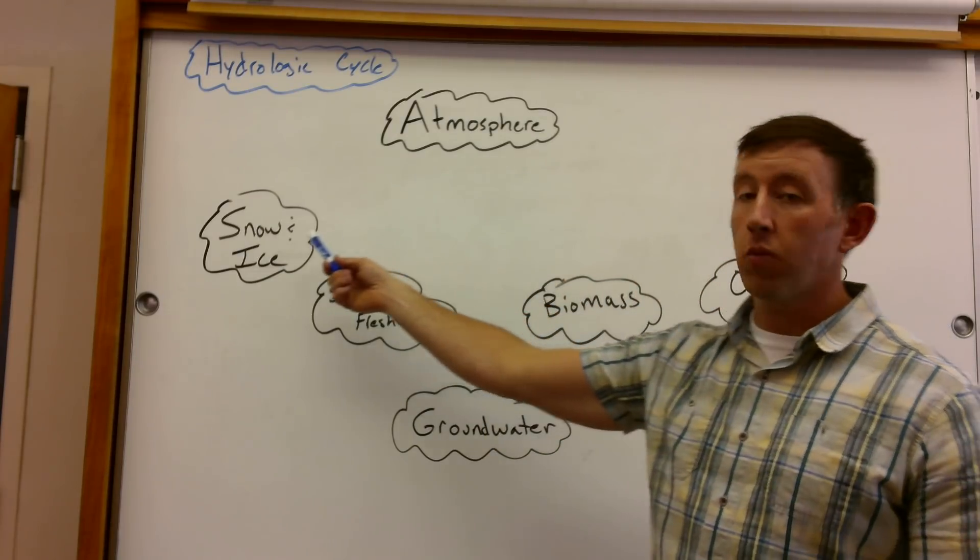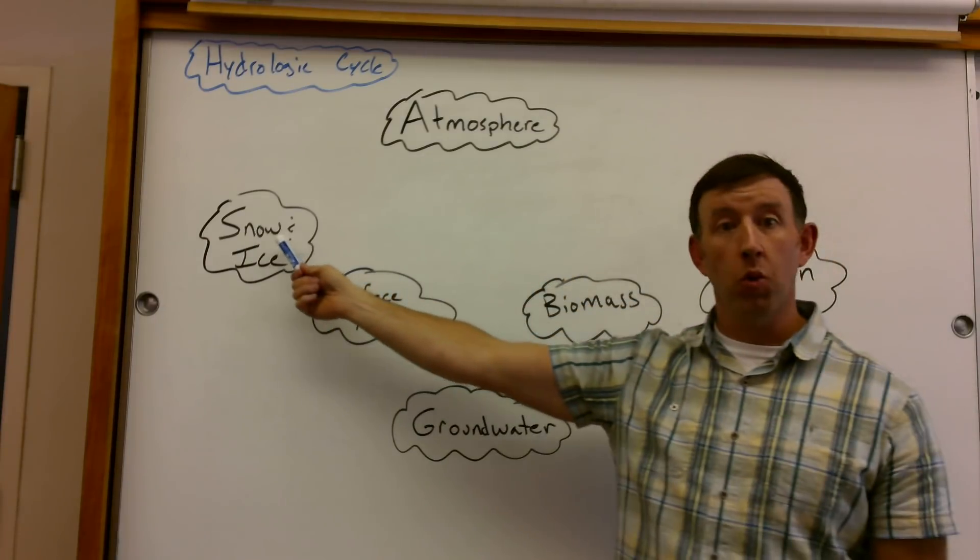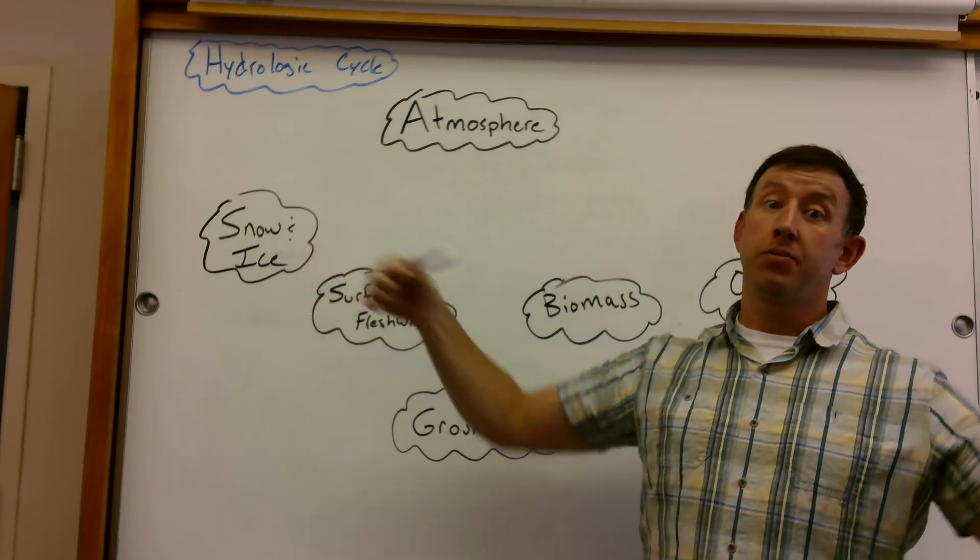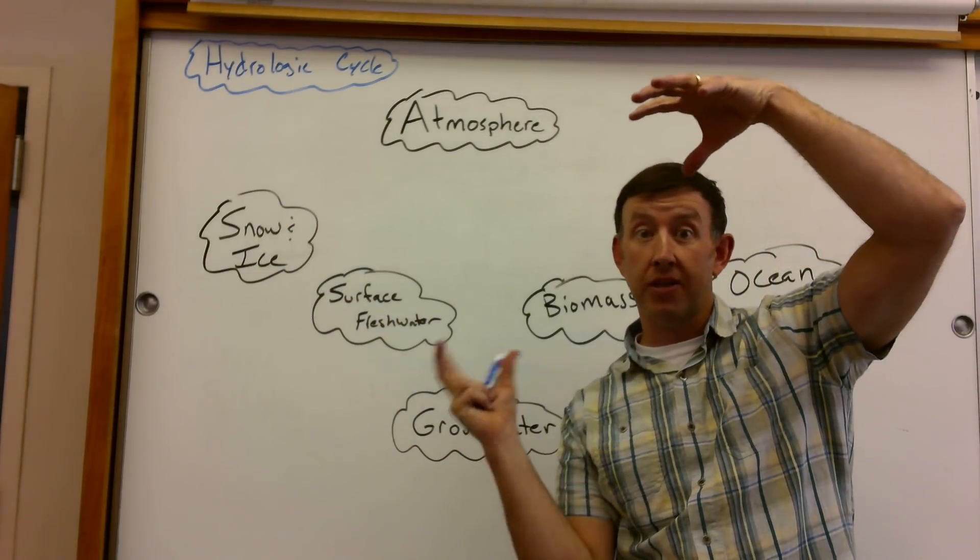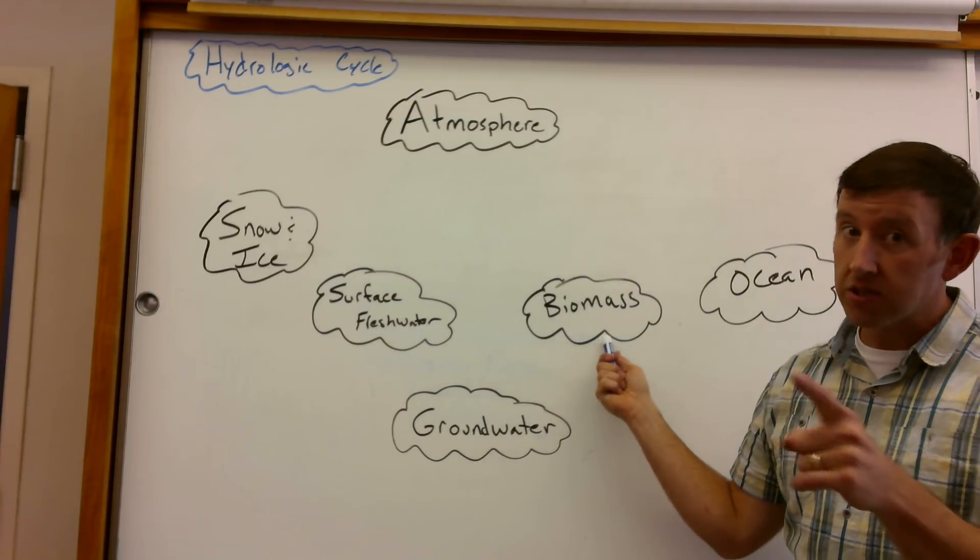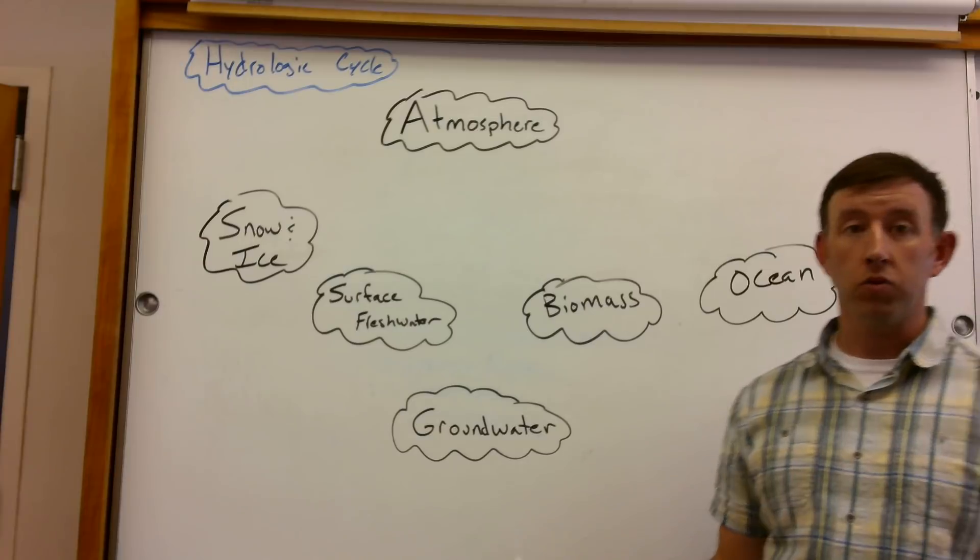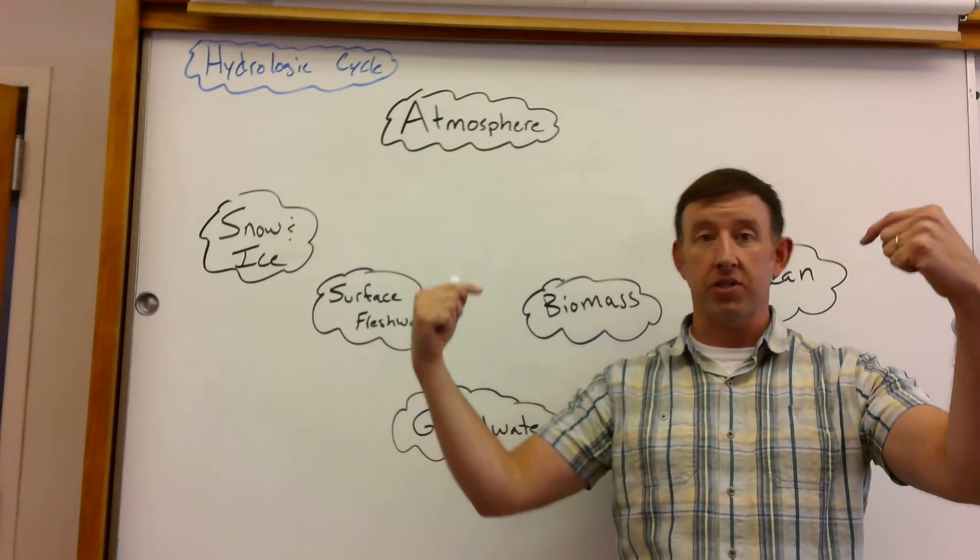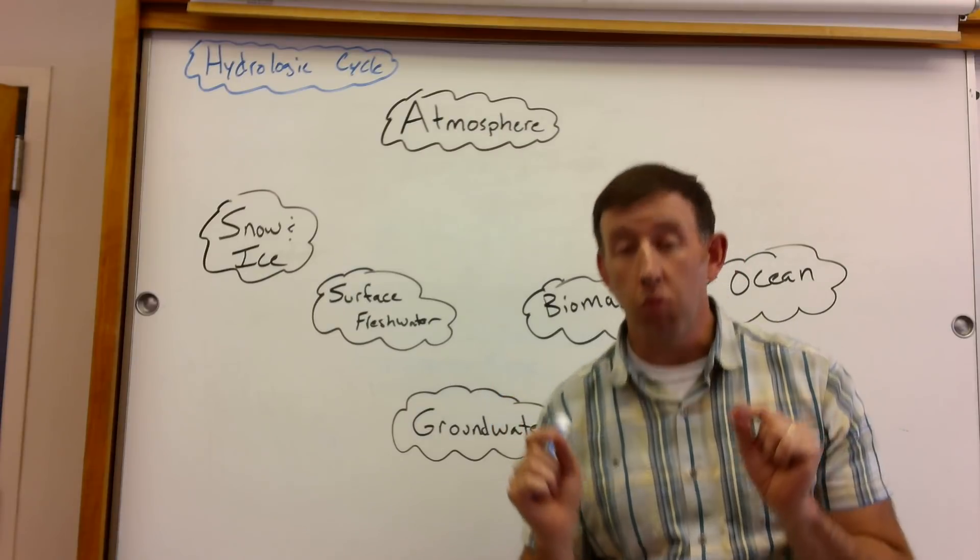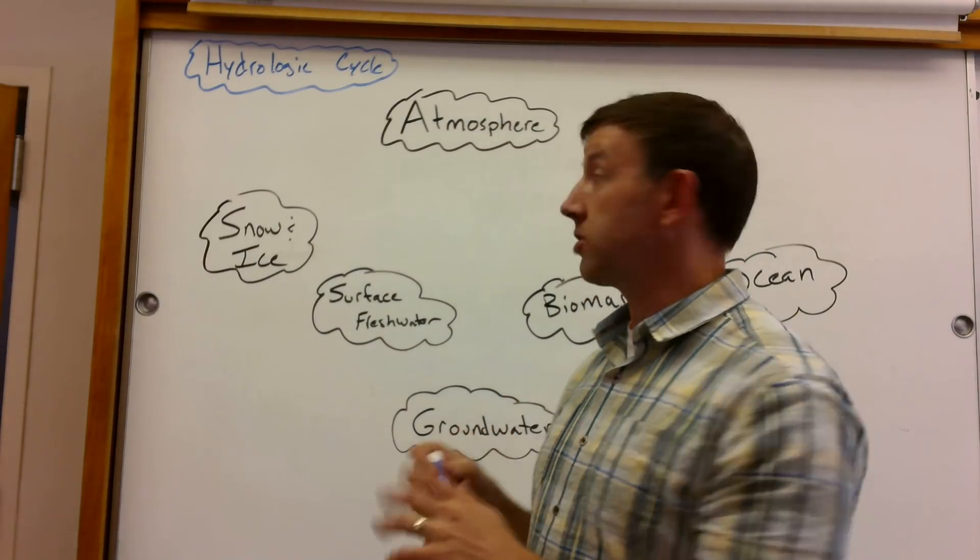So again, we're gonna start with our major reservoirs of water which include the atmosphere, snow and ice, big reservoir of water, particularly if you take the ice caps in Greenland and Antarctica, surface fresh water, biomass does contain some water, the ocean as you know, and then of course we've got groundwater. I'm gonna give some names to the processes that move water around. Might be a couple new terms that weren't part of your prior water cycle education.